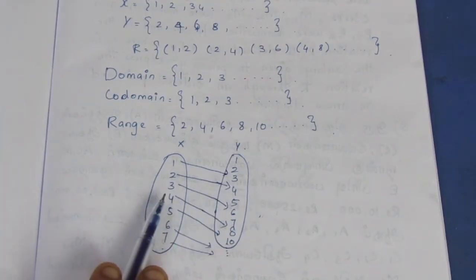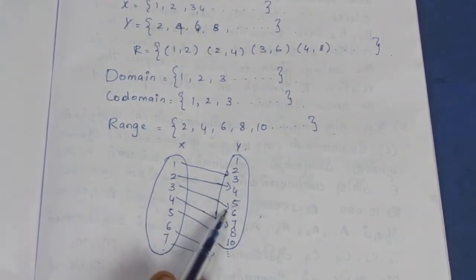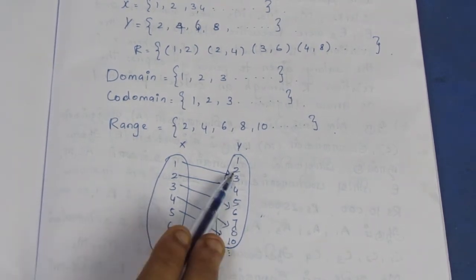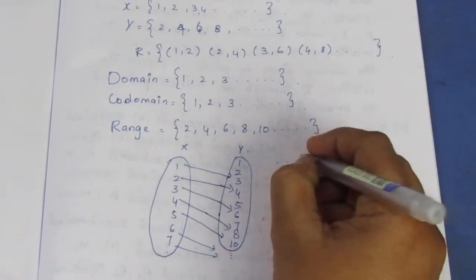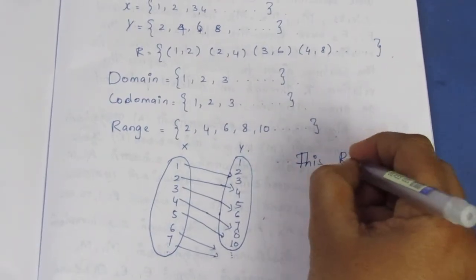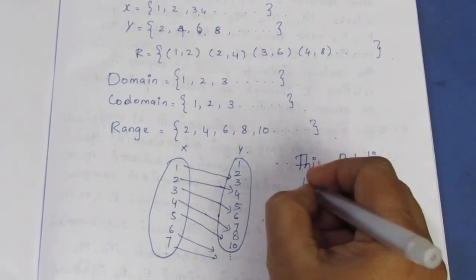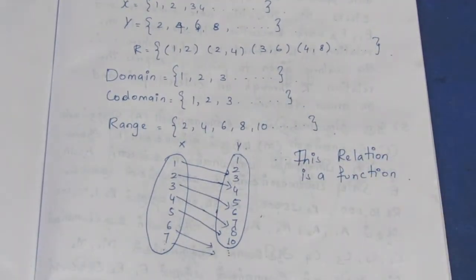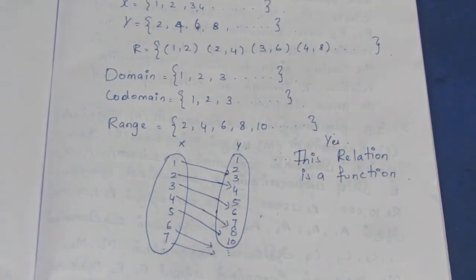This whole function — if you see, this is a function. If you have a value and an arrow mark, and two conditions are satisfied, then you have a function. So this relation is a function. Yes, this relation is a function. That is the sum. Thank you.